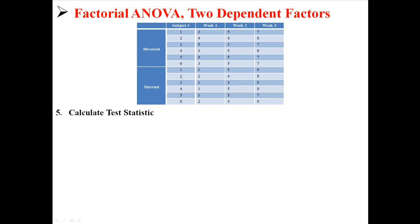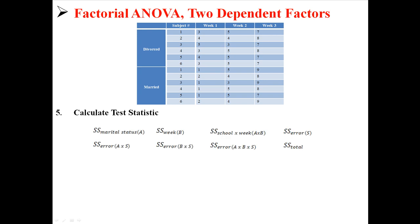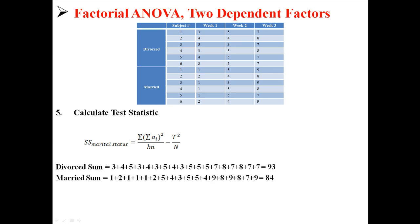Now let's calculate our test statistics. We need to find eight different sums of squares: A, B, A×B, four error terms, and the total. First, marital status: we take the sums at each level of A — all scores at divorced sum to 93, all scores at married sum to 84. We compute (93² + 84²) divided by b×n (3×6), then subtract T²/N where N=36 and T=177. This gives a sum of squares for marital status of 2.25.